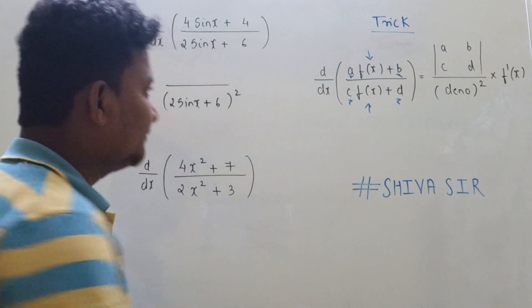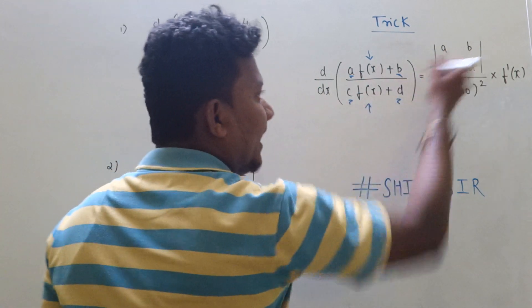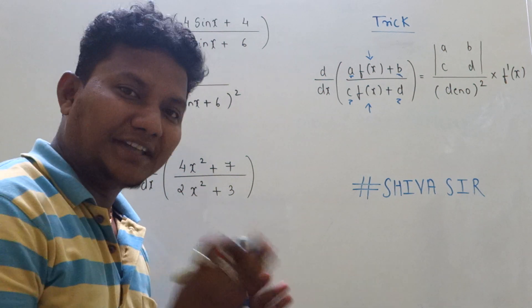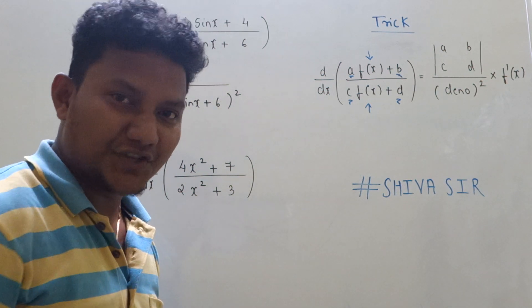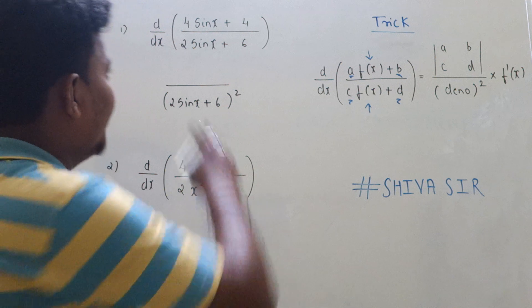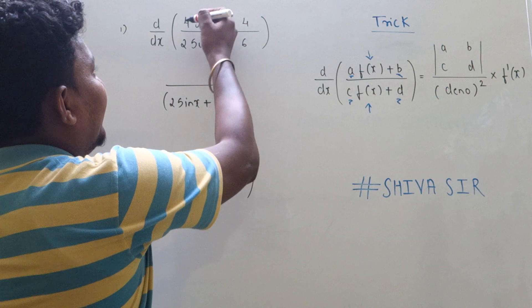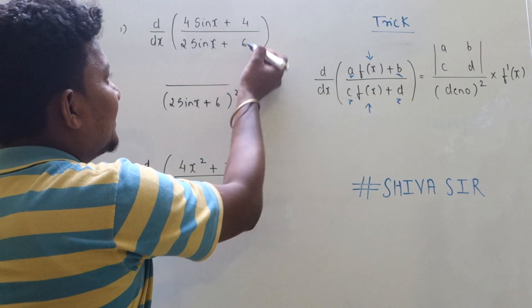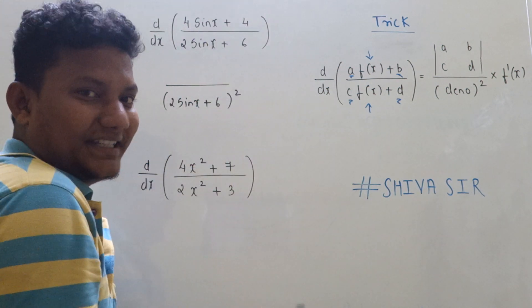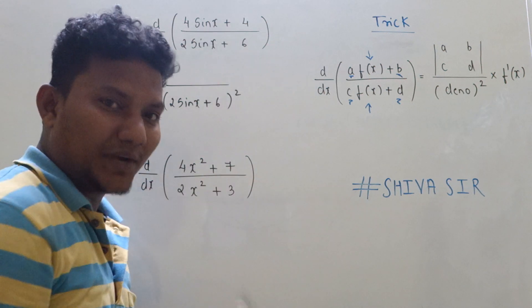Then in the numerator you have to find the determinant of that coefficient. So what are the coefficients over there? That is 4, 4, 2, 6. So find the determinant. Can I say the determinant is |4 4; 2 6|? Cross it, you will get the answer: 6×4 is 24 minus 2×4 is 8.